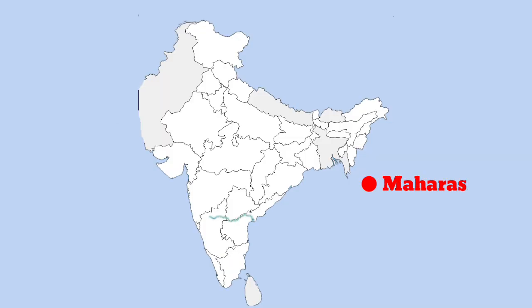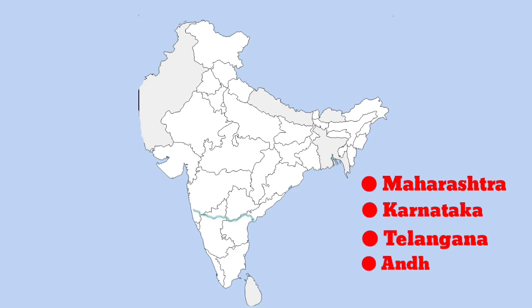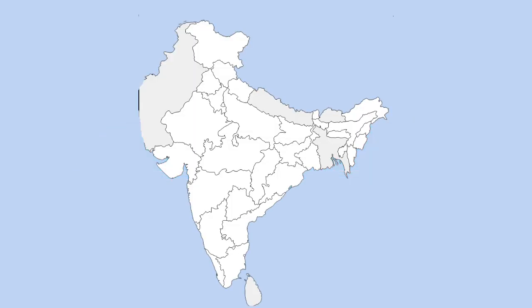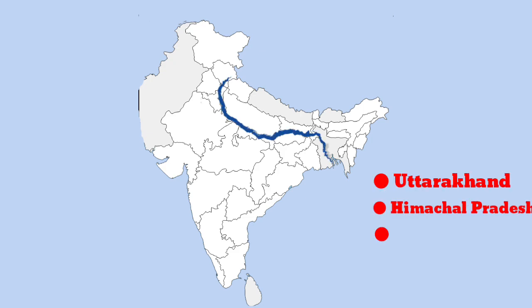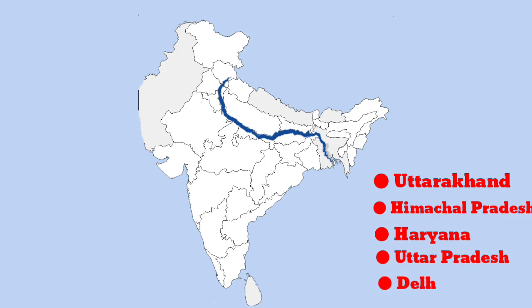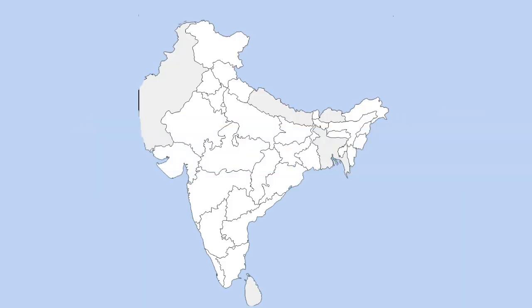Krishna: it flows through the states of Maharashtra, Karnataka, Telangana, and Andhra Pradesh. It derives its name from the Hindu god Krishna. Yamuna: it flows through the states of Uttarakhand, Himachal Pradesh, Haryana, Uttar Pradesh, and the Union Territory of Delhi. It is one of the sacred rivers in India and the second largest river in India.